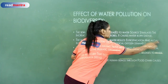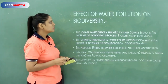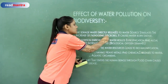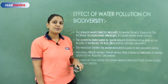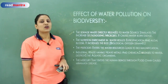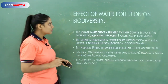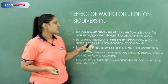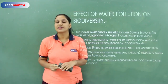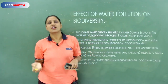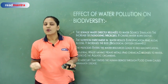Effects of water pollution on biodiversity: sewage waste directly released to water sources stimulates the increase of pathogenic microbes and causes waterborne diseases. Due to nutrition enrichment, eutrophication occurs and algal bloom appears. Eutrophication is the natural aging process of lakes, rivers, or ponds when nitrates, phosphates, or organic waste mixes into water — that process is called eutrophication.